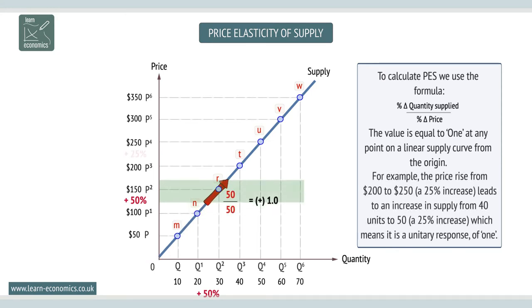Let's look at an example. The price rise from $200 to $250, a 25% increase, leads to an increase in supply from 40 units to 50 units, a 25% increase, which means it is a unitary response of 1.